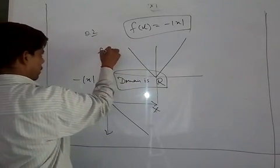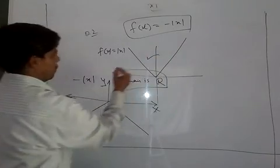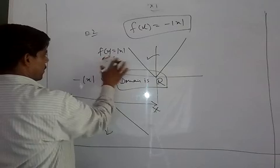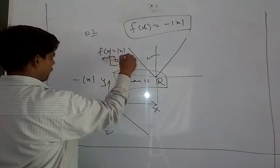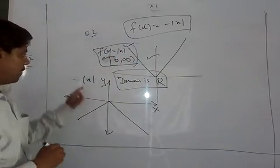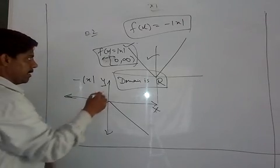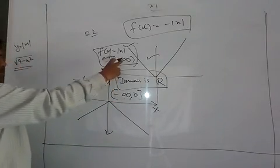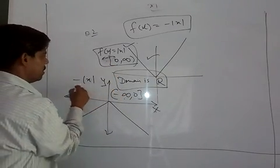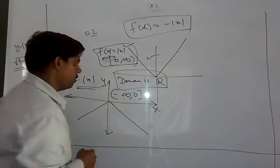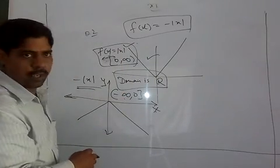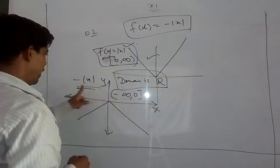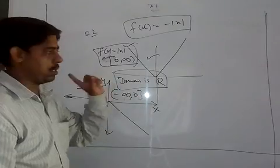So in this case, mod x, this graph, the range is all positive numbers, that is R positive including 0. We can write from 0 to infinity in case of mod x. But in case of minus mod x, the range is minus infinity to 0. And minus infinity and plus infinity are always not included. So the domain is real numbers and range is minus infinity to 0.